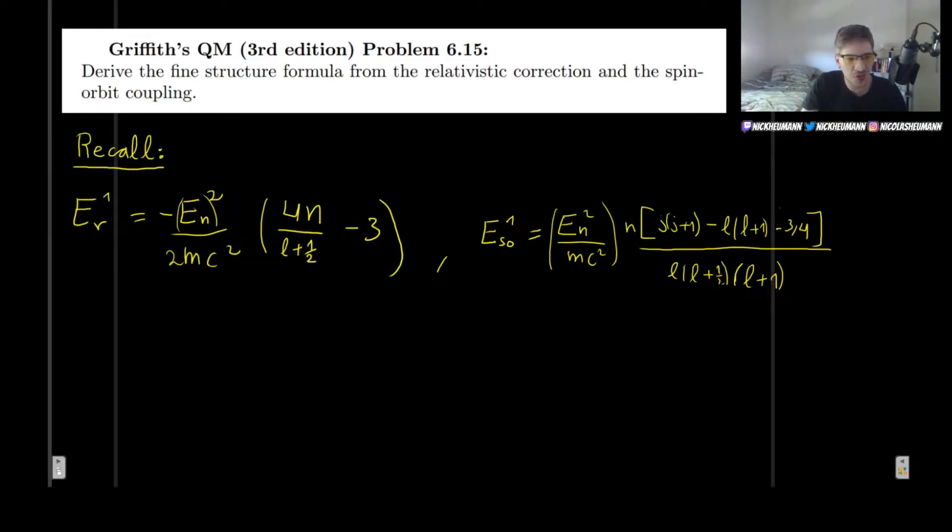Welcome, in this video I will show you how to solve problem 6.15 as it appears in the third edition of Griffith's Introduction to Quantum Mechanics. This question asks us to derive the fine structure formula from the relativistic correction and the spin-orbit coupling.